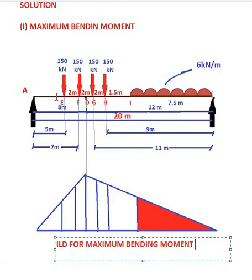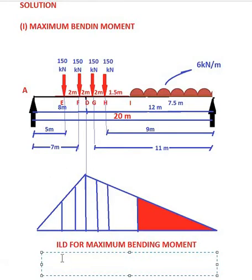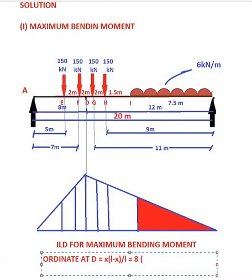Now I am going to find the ordinate at D. The formula for the maximum bending moment ordinate is x × (L − x) / L. So the ordinate at D = 8 × (20 − 8) / 20, which is equal to 4.8 meter. Here x is the sectional distance of 8 meter and L is the total span of 20 meter.